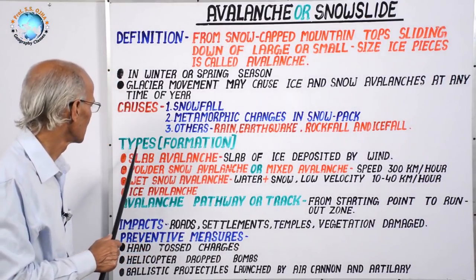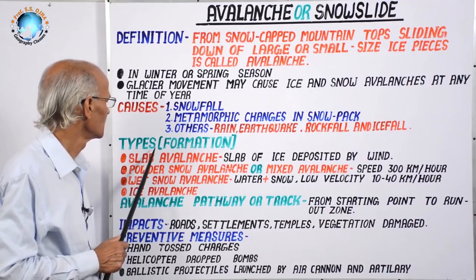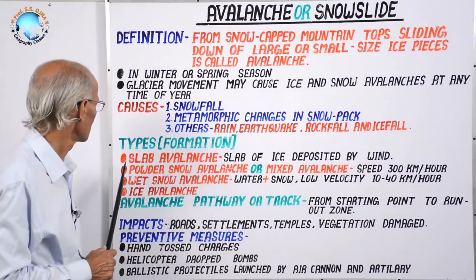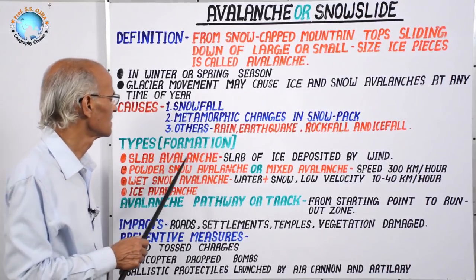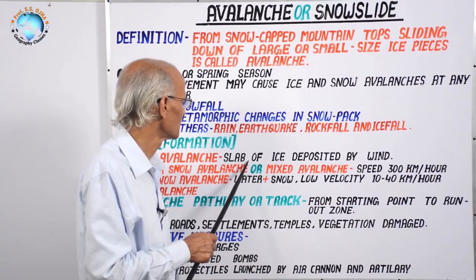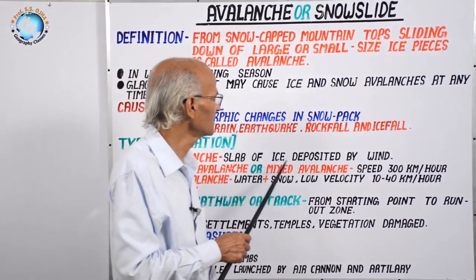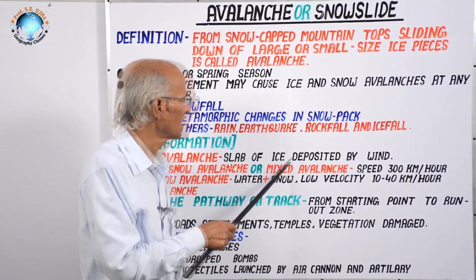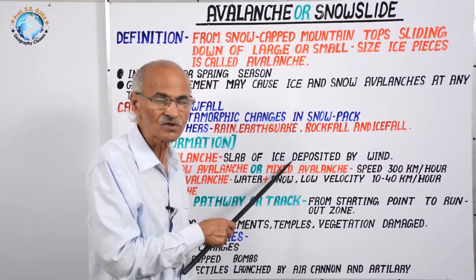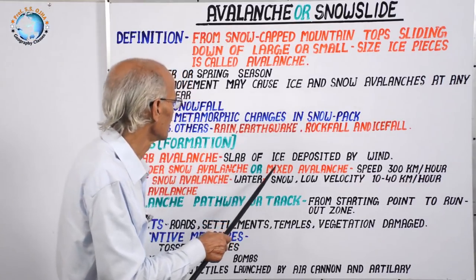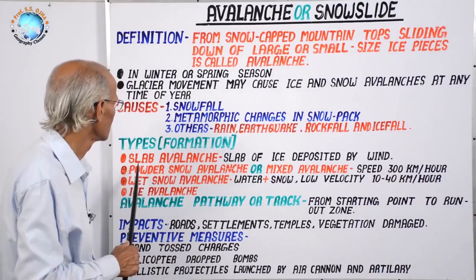Now let us study the types of avalanche based on their mode, speed, and formation. The first type is slab avalanche. Like a roof of a building collapsing, a slab of ice deposited by wind forms in the higher reaches of mountains. Wind carries small ice crystals and deposits them over high mountain segments, and when this slab slides down it is called slab avalanche.